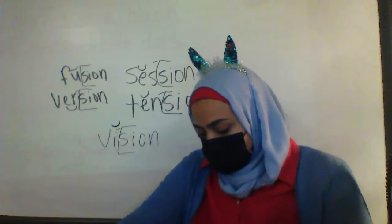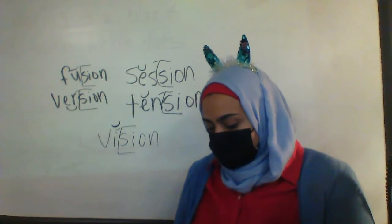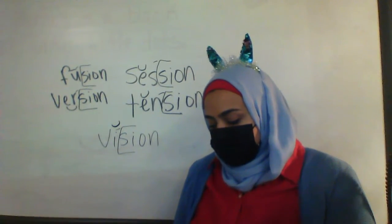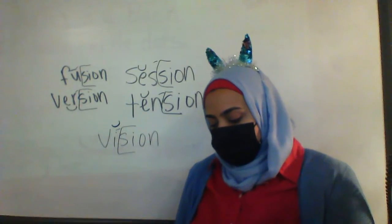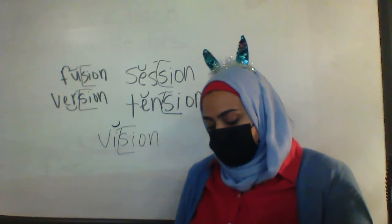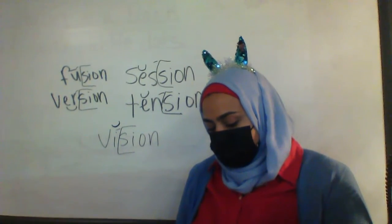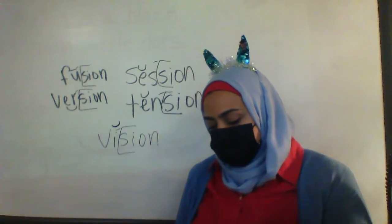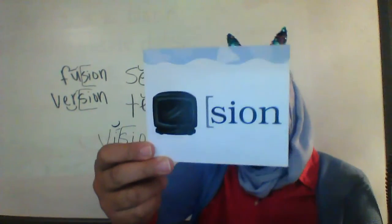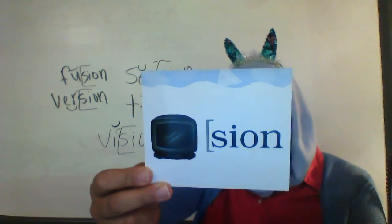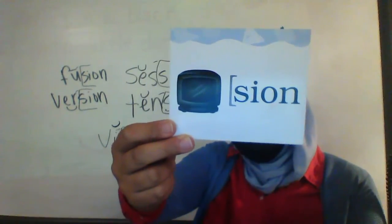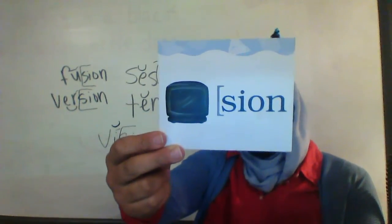We have a keyword for the zhun sound of final stable syllable S-I-O-N. Listen to this riddle: this is an appliance that has become a major part of our lives — until the 1930s this appliance didn't exist. When it was first invented, the picture was in black and white. Some of you probably watch more of this than your parents think you should. The keyword is television. Whenever we see this card, we're going to say television — zhun.